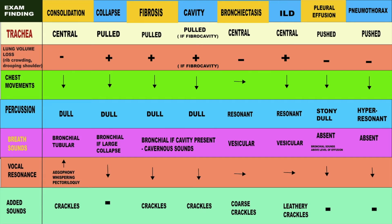Chest movements are diminished in all these conditions but not in bronchiectasis. Percussion findings would be dull in consolidation, dull in collapse, dull in fibrosis, dull in a fibro-cavity, resonant in bronchiectasis, resonant in interstitial lung disease, stony dull in pleural effusion, and hyper-resonant in pneumothorax.